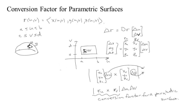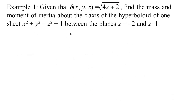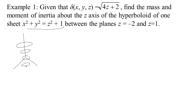Let's look at an example using r sub u cross r sub v to find the conversion factor. We have a particular density — mass per unit area — and we want to find the mass and moment of inertia about the z-axis of a hyperboloid of one sheet, between the planes z equals negative 2 and z equals 1. When z is 0, we have a circle of radius 1, and as z increases the radius grows, giving this hyperboloid of one sheet. If the constant were negative 1 instead, it would be a hyperboloid of two sheets.